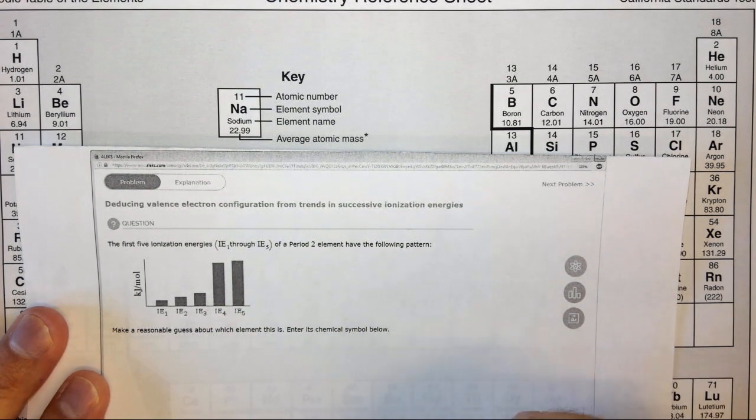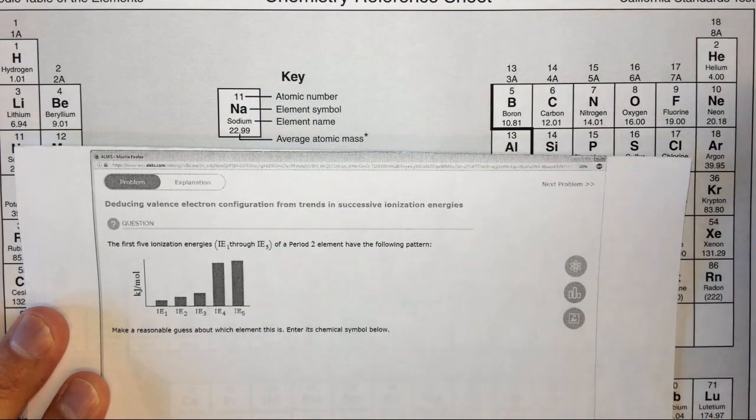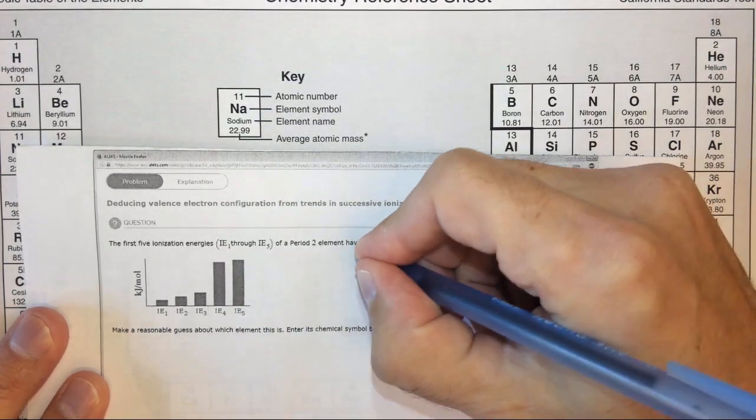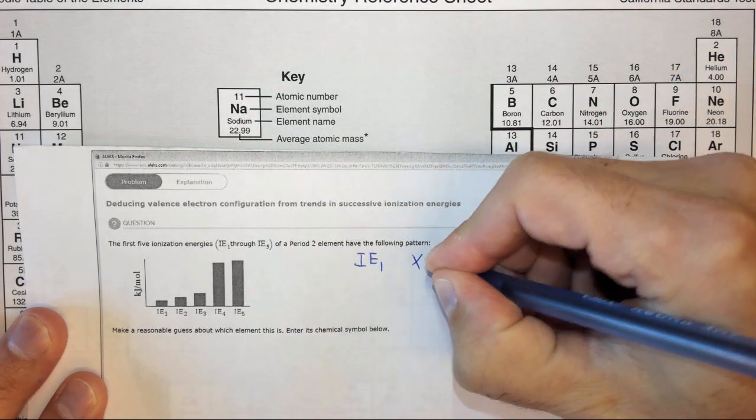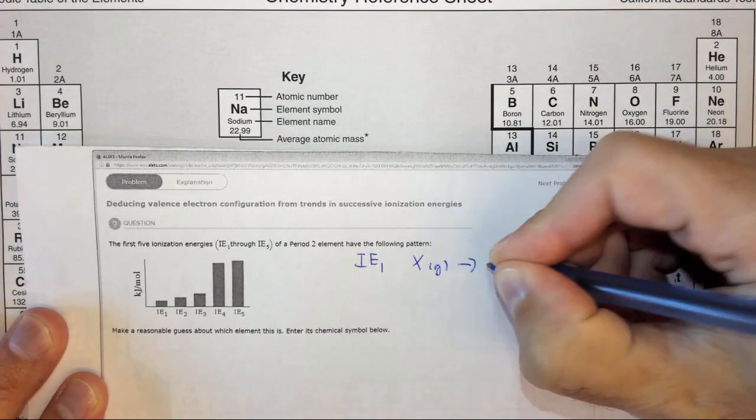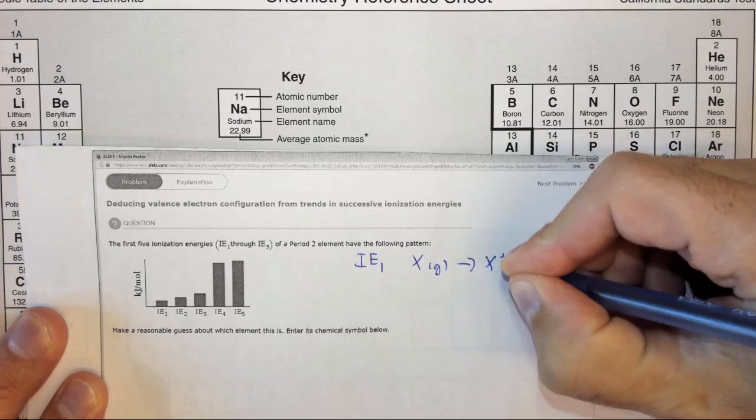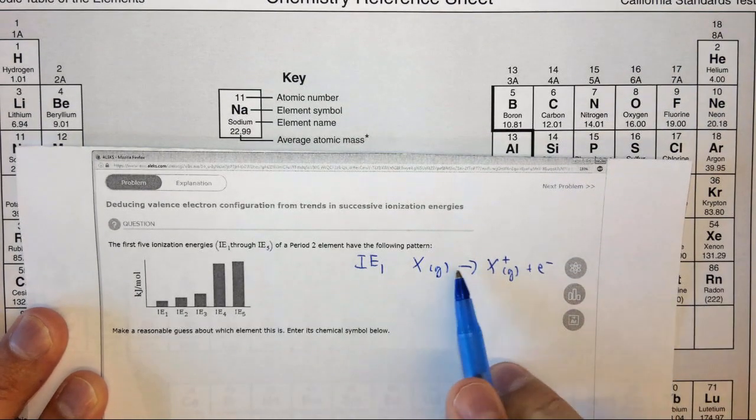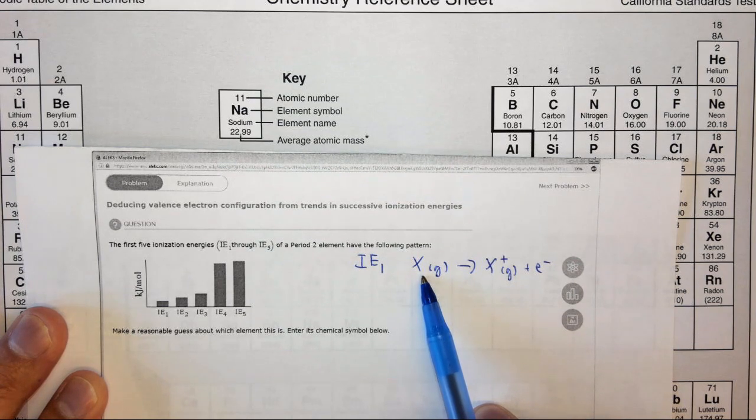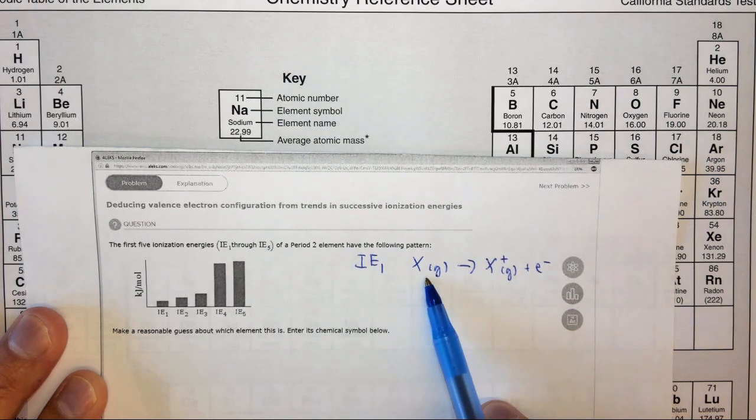If we consider element X, which is not a real element but just a general form, the first ionization energy of element X is X in the gas phase yields X plus in the gas phase plus an electron. So it's essentially taking away an electron from element X.